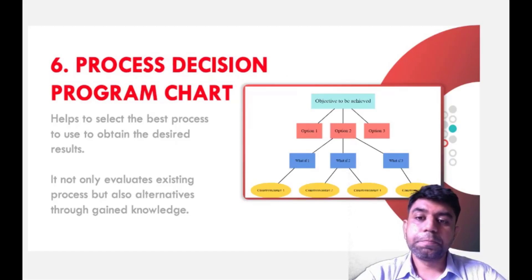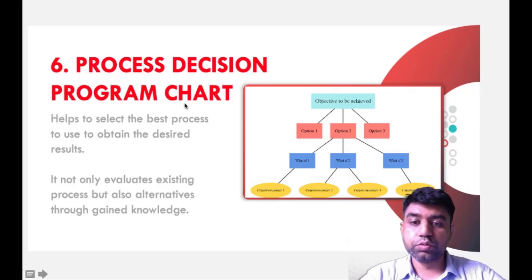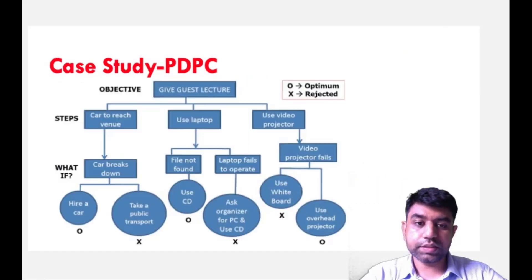The another one is PDPC, that is Process Decision Program Chart. This is very similar to tree diagram or fault tree analysis. But the additional part in this process decision program chart is at the end of the chart, we are writing both the possibilities: which one needs to be selected and which one needs to be rejected. Both will be discussed. So it helps to select the best process to get the desired result. And it not only evaluates the existing process but also evaluates the alternatives through the gained knowledge. Let us take the example. Suppose if you need to go for guest lecture, you need to give some guest lecture. So what are the different steps behind that?